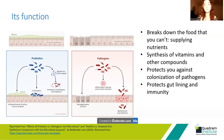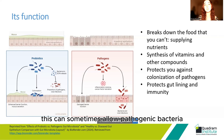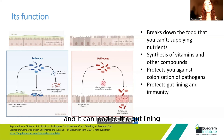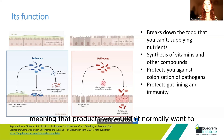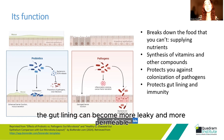When we see a shift in the community structure, this can sometimes allow pathogenic bacteria the opportunity they need to get established. It can lead to the gut lining not functioning optimally, meaning that products we wouldn't normally want to get into our bloodstream can. Essentially, the gut lining can become more leaky and more permeable — something called leaky gut.